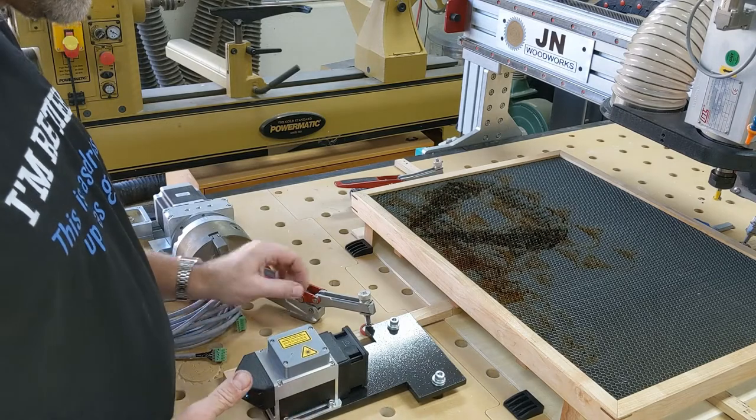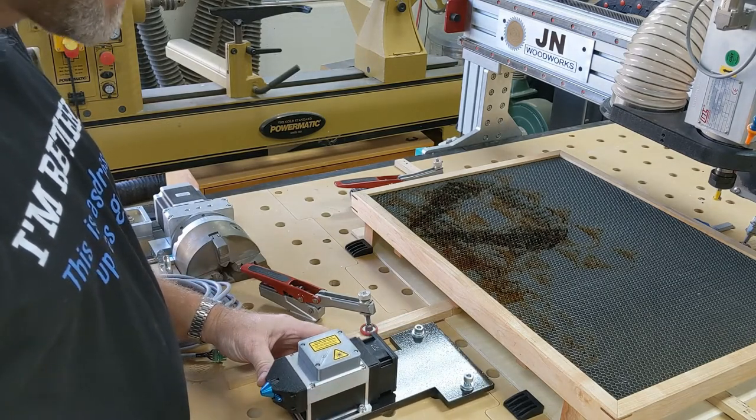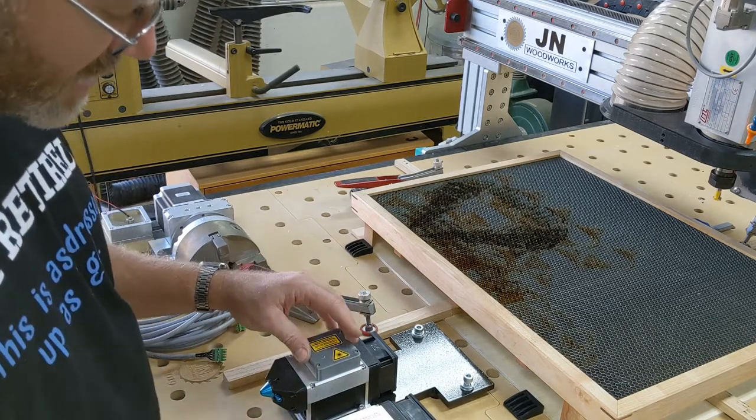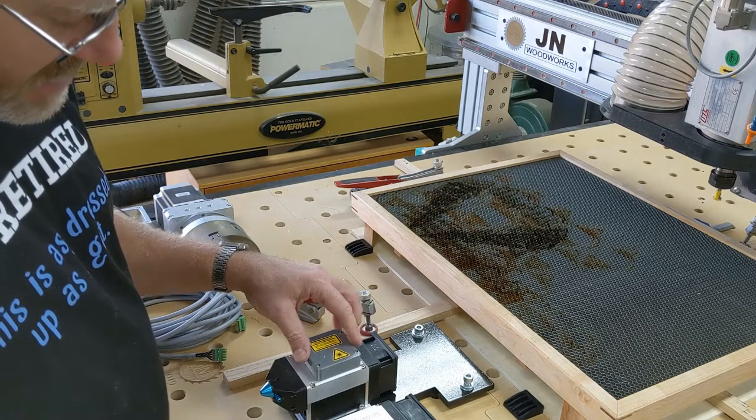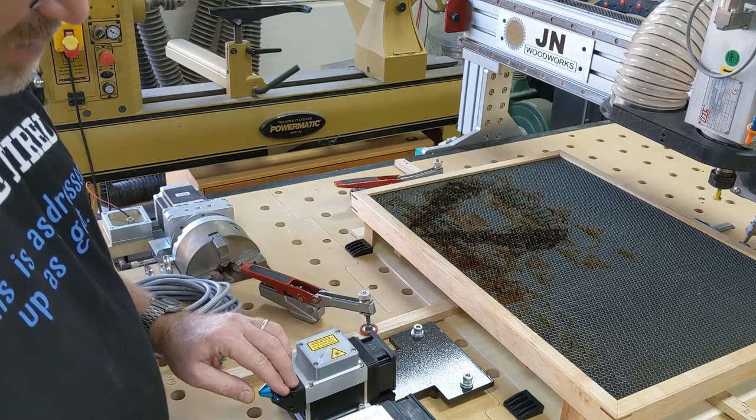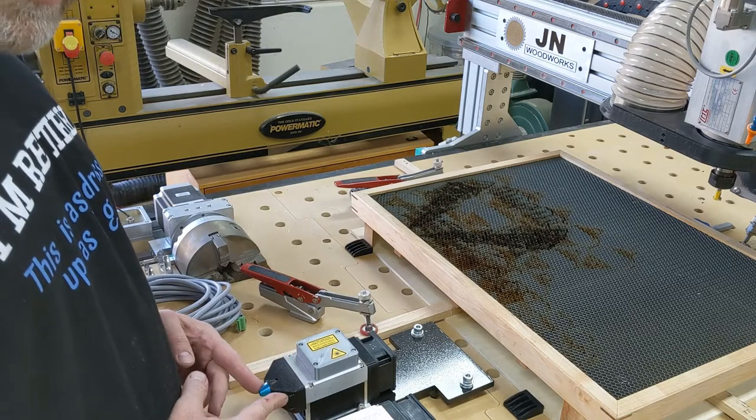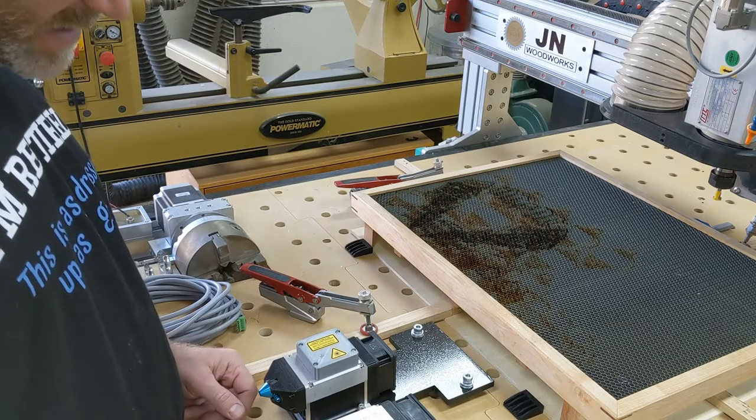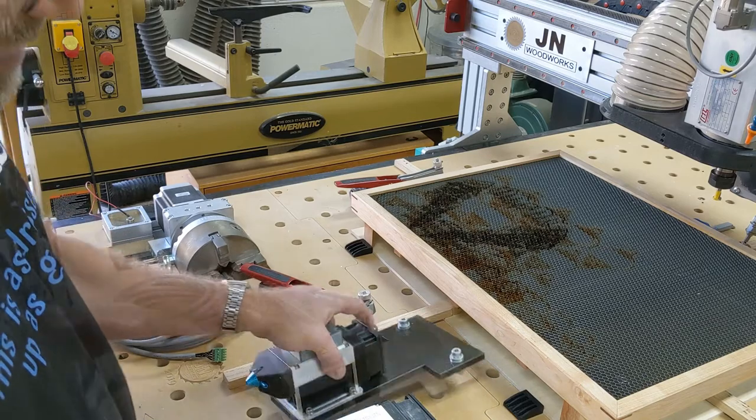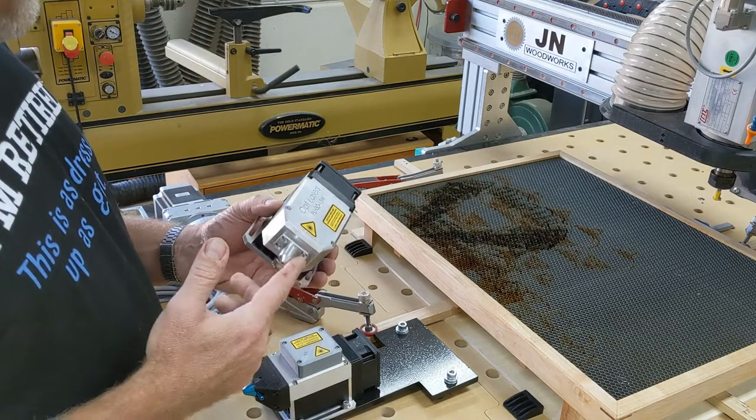The one on the left is the prototype that I got maybe about five months ago now. You can see it's got the electronics in the 3D printed box and it came with a 3D printed shroud on here. I added the air assist nozzle. This is actually off of a CO2 laser. It didn't come with anything.